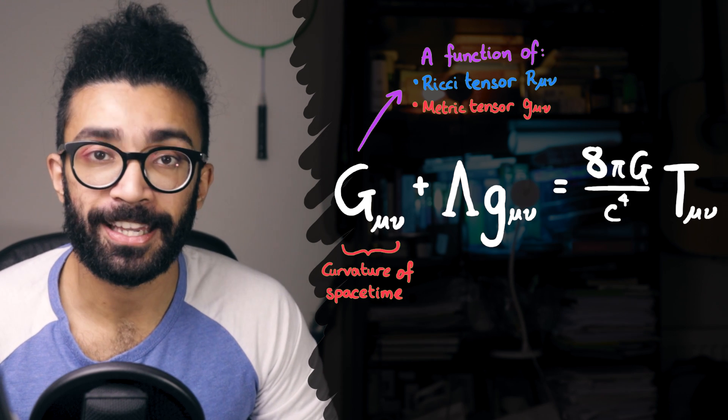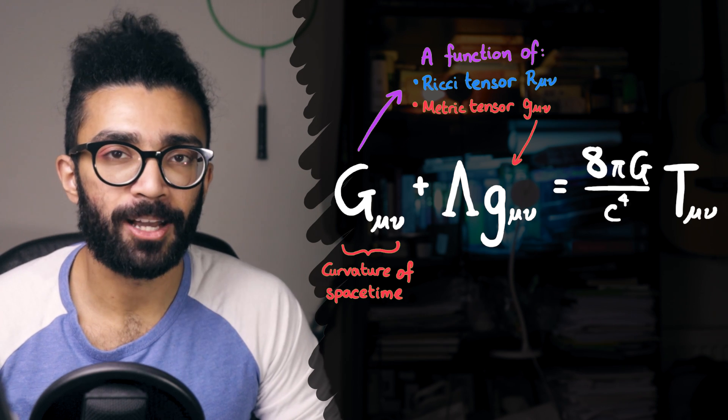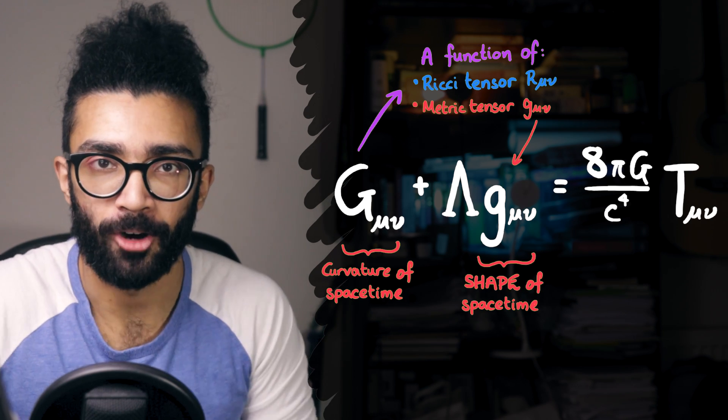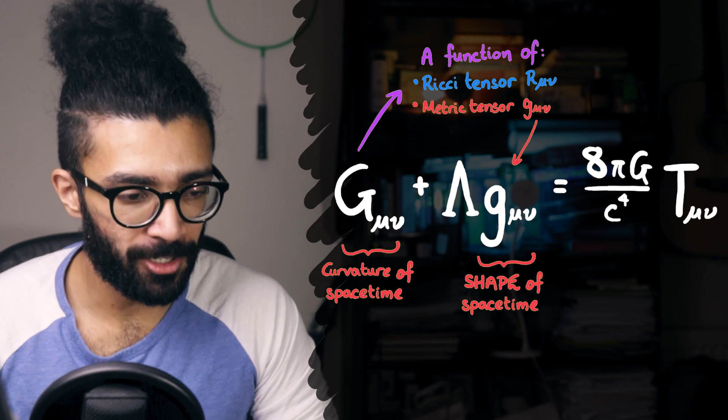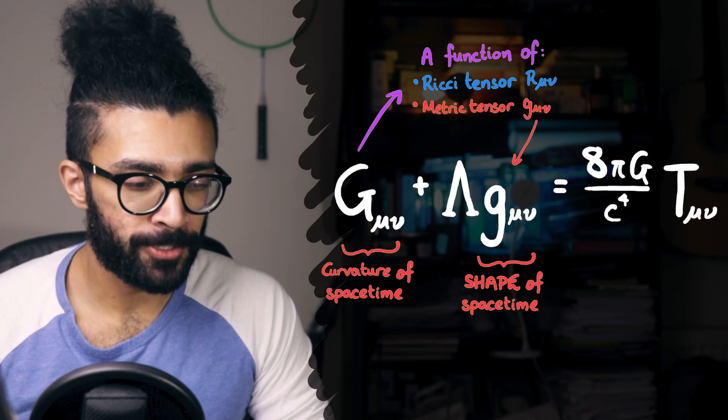By the way, we can also see in this term here. It's a very important tensor in relativity. The metric tensor is effectively a measure of the shape of spacetime, as opposed to the curvature, which is more measured by the uppercase G mu nu Einstein tensor. The metric tensor deserves some explanation.